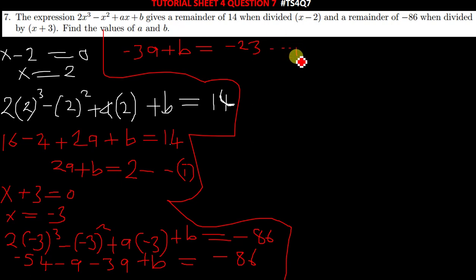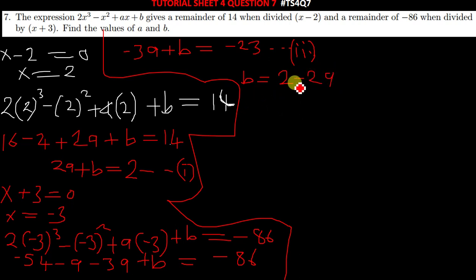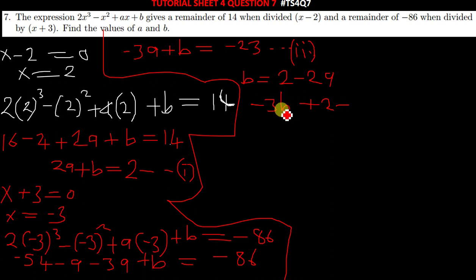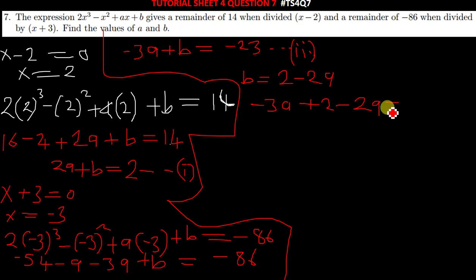We now solve equation 1 and equation 2 simultaneously. From equation 1, which is 2a plus b equals 2, we make b the subject of the formula: b equals 2 minus 2a. We substitute this into equation 2, giving negative 3a plus 2 minus 2a equals negative 23.